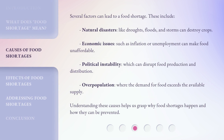Several factors can lead to a food shortage. These include natural disasters like droughts, floods, and storms that can destroy crops. Economic issues such as inflation or unemployment can make food unaffordable. Political instability can disrupt food production and distribution. Overpopulation, where the demand for food exceeds the available supply. Understanding these causes helps us grasp why food shortages happen and how they can be prevented.